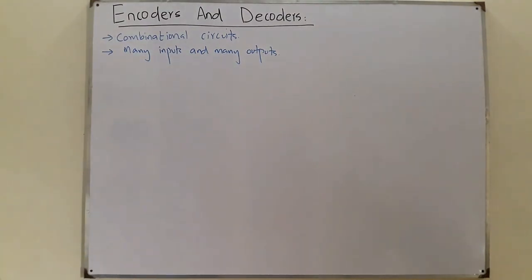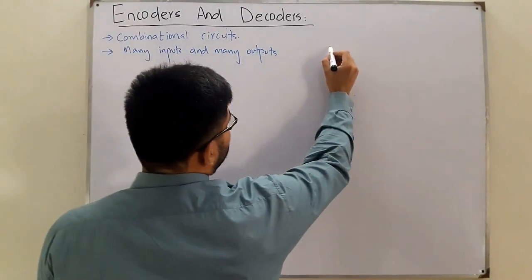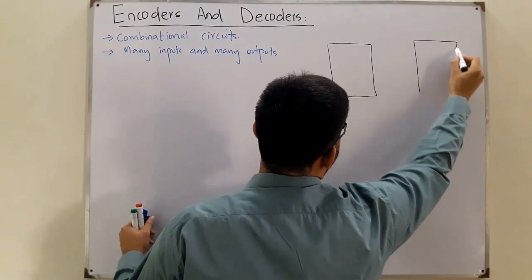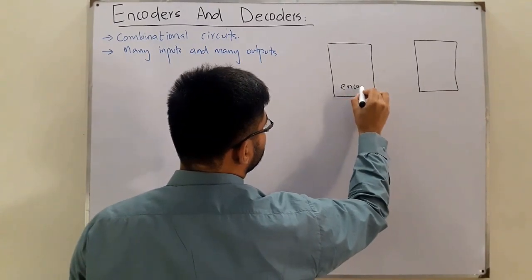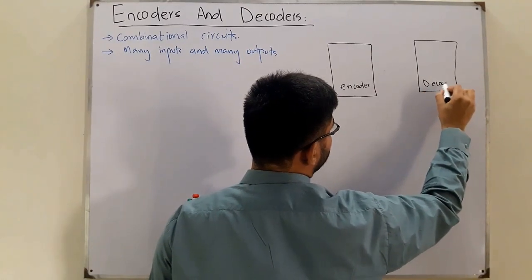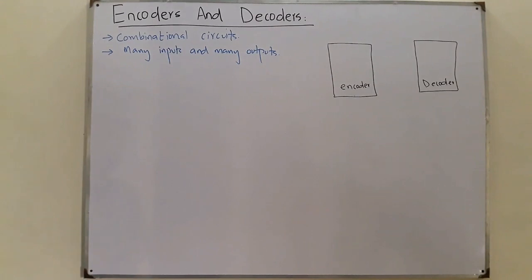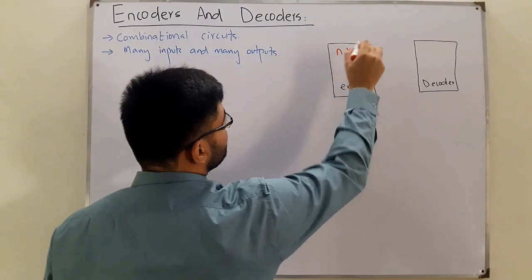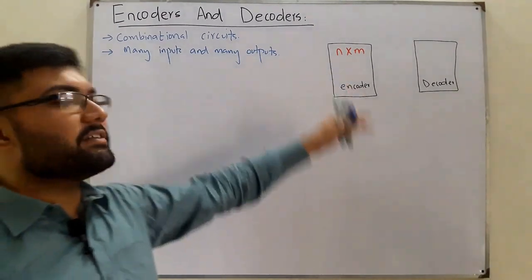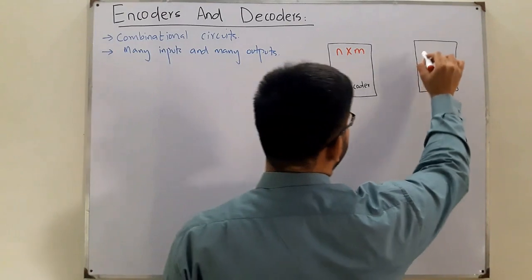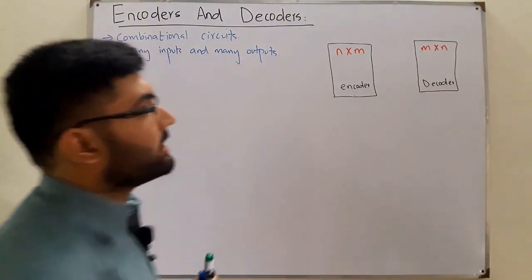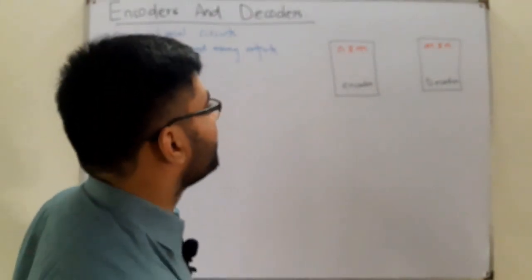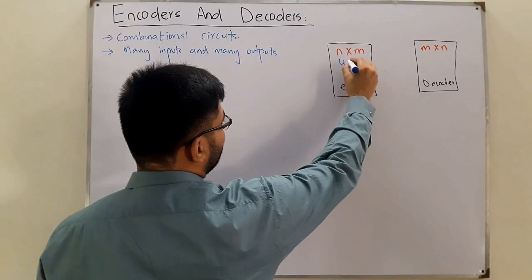Let's understand both together. For an encoder, we have n input lines and m output lines. For a decoder, we have the opposite: m input lines and n output lines. So the decoder is essentially the reverse of the encoder.